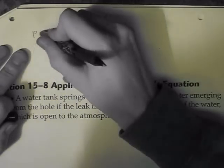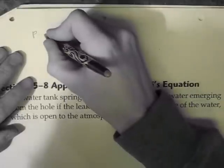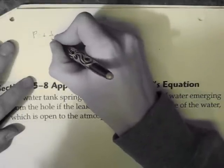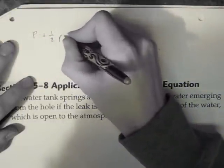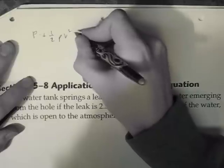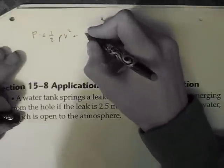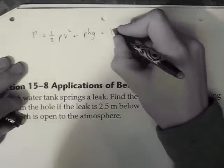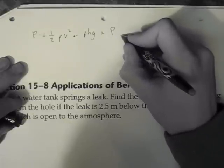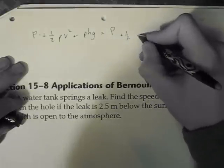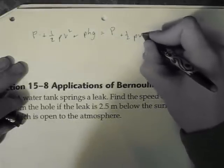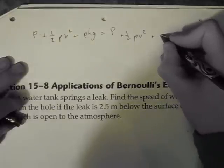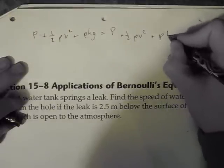So if we use Bernoulli's equation, it's going to be P + 1/2 ρv² + ρgh = P + 1/2 ρv² + ρgh. Pressure plus one half density velocity squared plus density height gravity equals pressure plus one half density velocity squared plus density height times gravity.